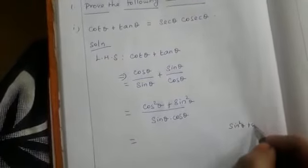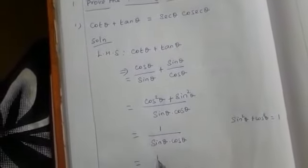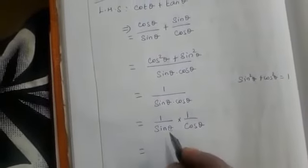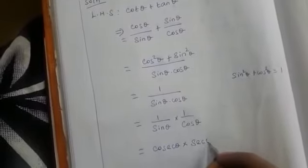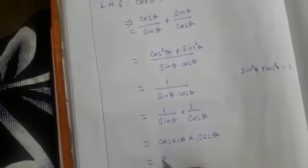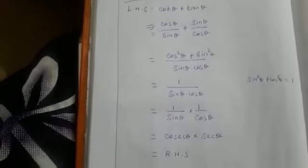So we have 1 divided by sin theta into cos theta. Let us split and write this as 1 by sin theta into 1 by cos theta. Now 1 by sin theta is cosecant theta and 1 by cos theta is secant theta, which is equal to RHS. So taking LHS we have proven the RHS answer. Hence proved.